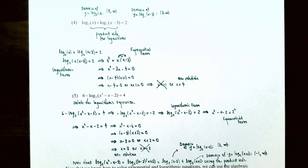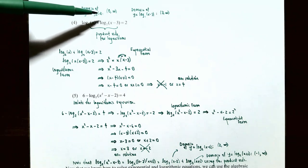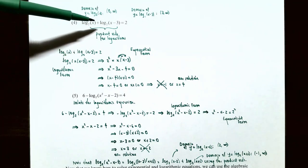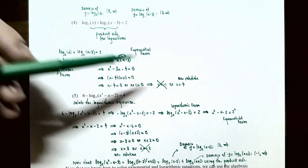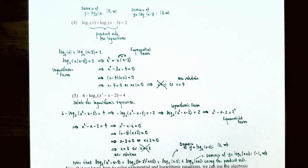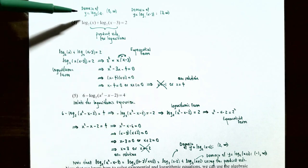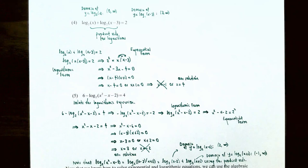Check the domains: log₂(x) has domain (0, ∞), and log₂(x−3) has domain (3, ∞). An x value must be greater than 3 to satisfy both domains. Since x = −1 is not greater than 0 (let alone 3), it is an extraneous solution. Since x = 4 is greater than 3, it is in both domains and is the only solution.